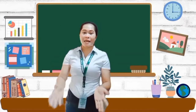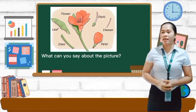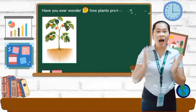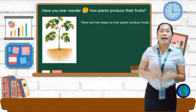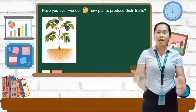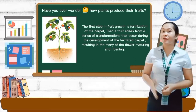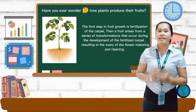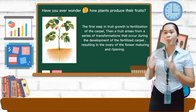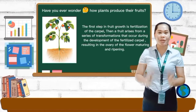So this time class, I am going to show you a picture. So what can you say about the picture? Yes, Dani. Okay, very good. This is part of a flower. So have you ever wondered how plants produce their fruits? So class, there are two steps on how plants produce fruits. Fruits are the mature and ripened ovaries of flowers. The first step is fruit grows from fertilization of a carpel. Then a fruit arises from a series of transformations that occur during the development of the fertilized carpel, resulting in the ovary of the flower maturing and ripening.